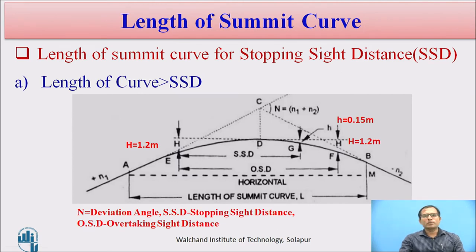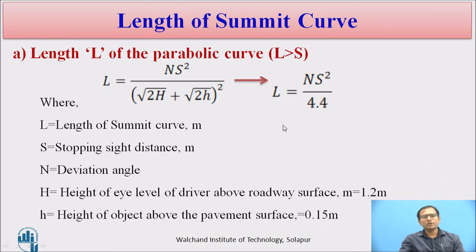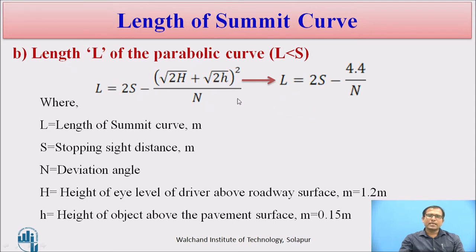For finding the length of the summit curve using stopping sight distance criteria: when length L is more than stopping sight distance S, substituting H = 1.2 m and h = 0.15 m into the simple parabolic formula gives L = NS² / 4.4. When L is less than S, the equation reduces to L = 2S − 4.4/N.